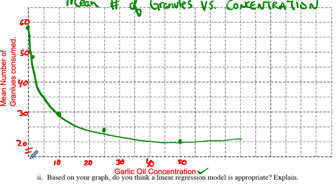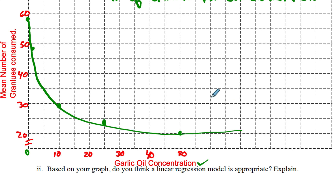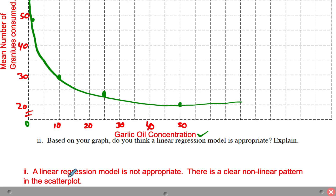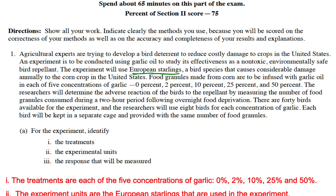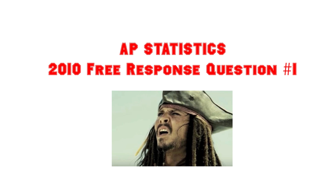That would be incorrect. So I put the points and did my best to draw that — probably a 2 out of 10 on the drawing. But clearly it's nonlinear. The question asks, based on your graph, do you believe linear regression is appropriate? The linear regression model is not appropriate — there is a clear nonlinear pattern in the scatter plot. Put a title, label your axes, plot your points, and you're good to go. That was number one from 2010. If you get one of those questions, that is easy peasy. Good luck to you.